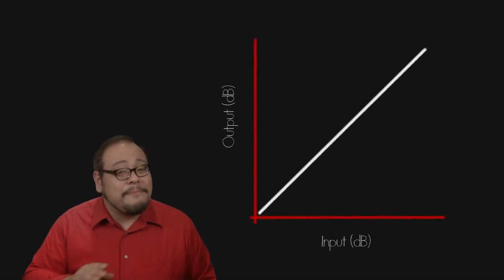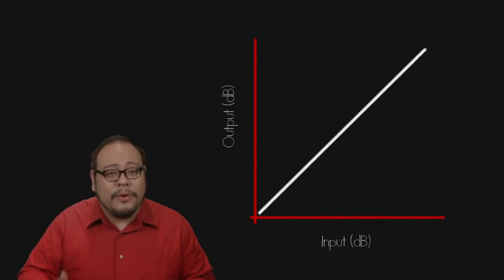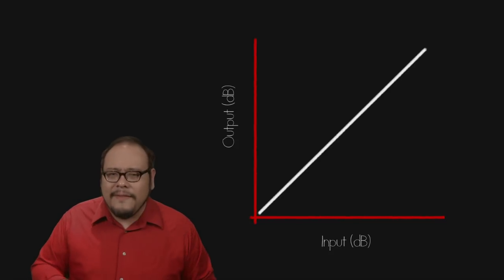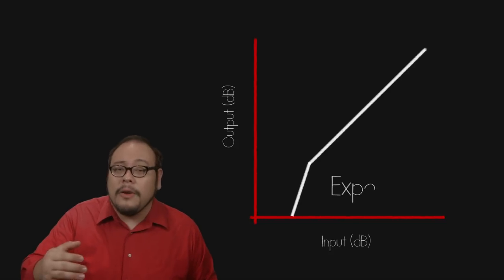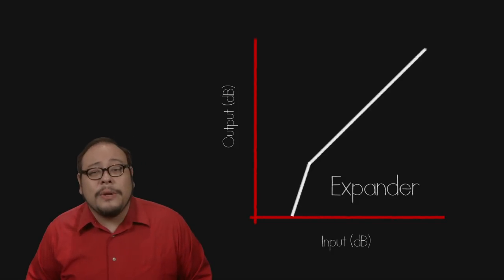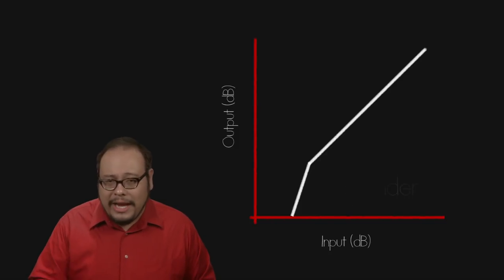The opposite of a compressor is called, as you might imagine, an expander. Going back to our curve, an expander is part of the curve that has a slope of greater than 1. Let's say we want the audio that is below negative 20db to get quieter faster. Our curve reflects us with a steeper slope. Expanders are generally only used for the quieter parts of the dynamic range.